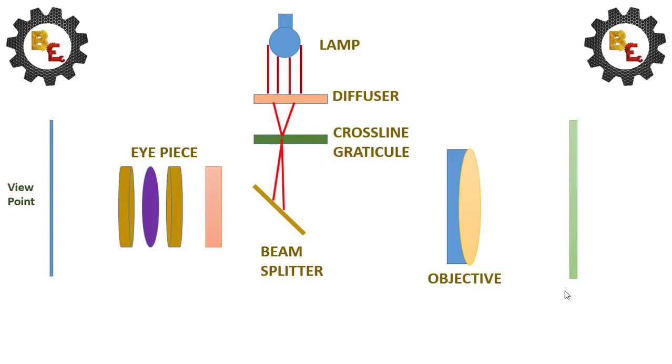The light waves will diverge from the reflector point, and these light waves projected on the objective via the beam splitter. This objective will provide the pencil of light. This action is known as autocollimation.